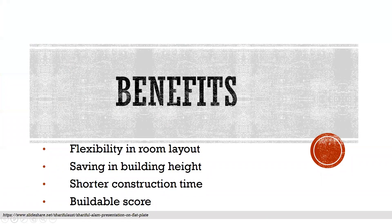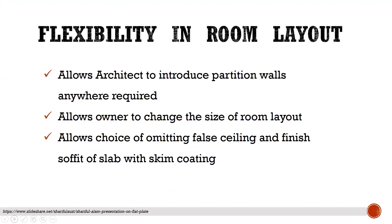Benefits of flat plate systems include flexibility in room layout, saving in building height, and shorter construction time. Flexibility in room layout allows the architect to introduce partitions anywhere required, allows the owner to change the size of the room layout, and allows the choice of omitting a false ceiling and finishing the soffit of the slab with skim coating.